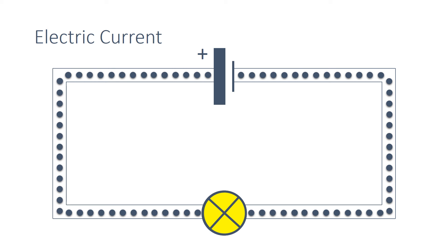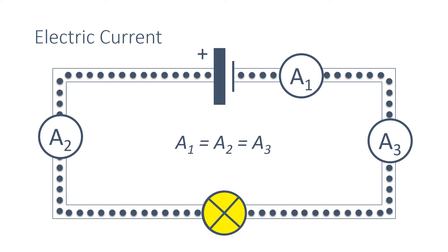In a single closed loop circuit, the current is the same at any point. This means that the same number of electrons pass through any point of the circuit every second.